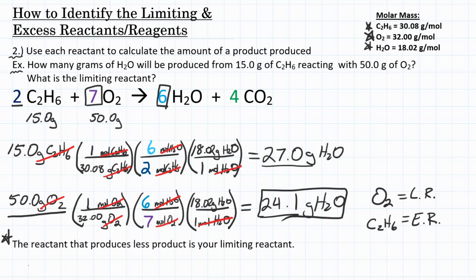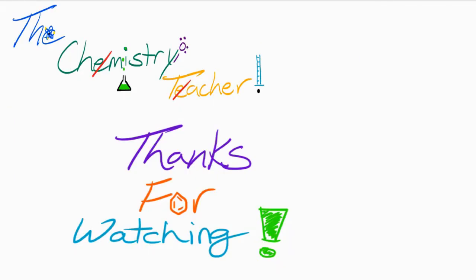There you have it — two ways to identify the limiting and excess reactants. If you want to see another example, click in the top right. Please like this video if it helped you. Check the description below for additional help and resources, and please subscribe and ring the bell to get notified for new videos. Thank you so much for watching.